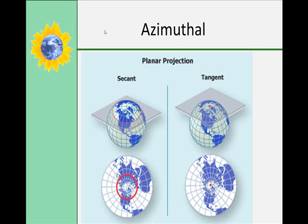This is part two of the MAPS lecture, lecture five, and we're going to start off with azimuthal projections. Azimuthal projections are characterized by straight or curved meridians and curved parallels. The meridians radiate from the poles in azimuthal projections, regardless of what type.